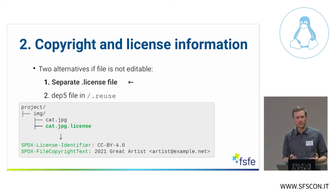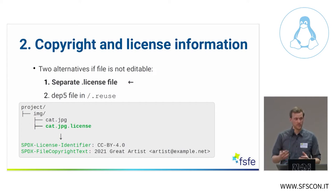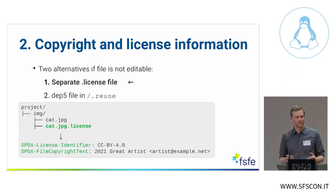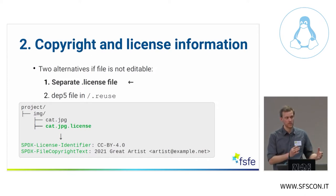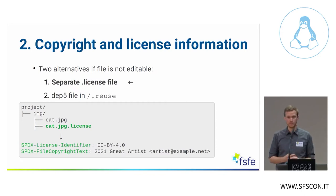What can you do if you cannot edit the file directly? Ideally the information would be in the file itself, because then if you copy it to another place you conserve that information. But sometimes it's not possible — you have a binary file like a picture, or a JSON file that doesn't support in-file comments. So in this example we have a picture called cat.jpg. You can create a plain text file with the same name and append .license to it. Inside this file you write the same information: a license identifier and the copyright line.